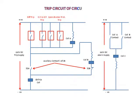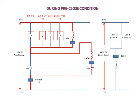The connection of the TCS relay and trip circuit of the circuit breaker will be as shown in the figure. During pre-close condition, the flow of current will be as shown — both coil A and B will be in pickup condition. Since both coil A and B are in pickup condition, coil C will also be picked up as coil A and B contacts close.